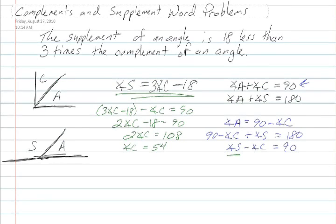Then we can find the measure of the supplement. Well, we can find the measure of the angle by subtracting from 90. So we're going to get 90 minus 54, which is 36 degrees.